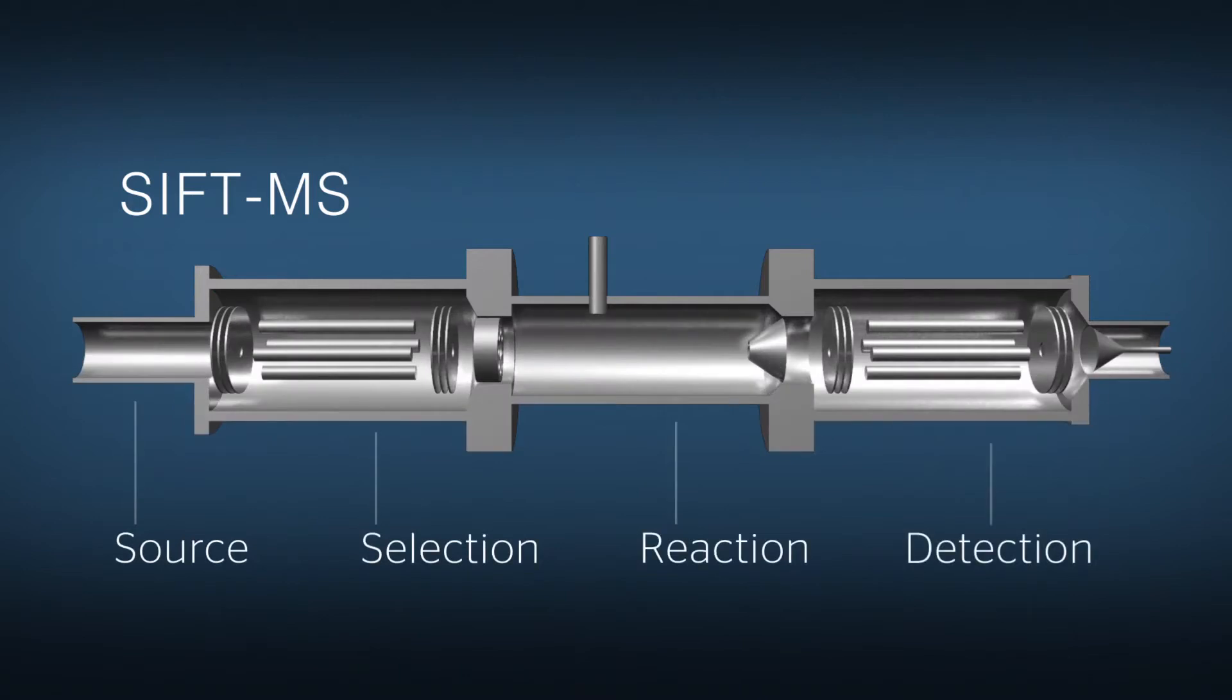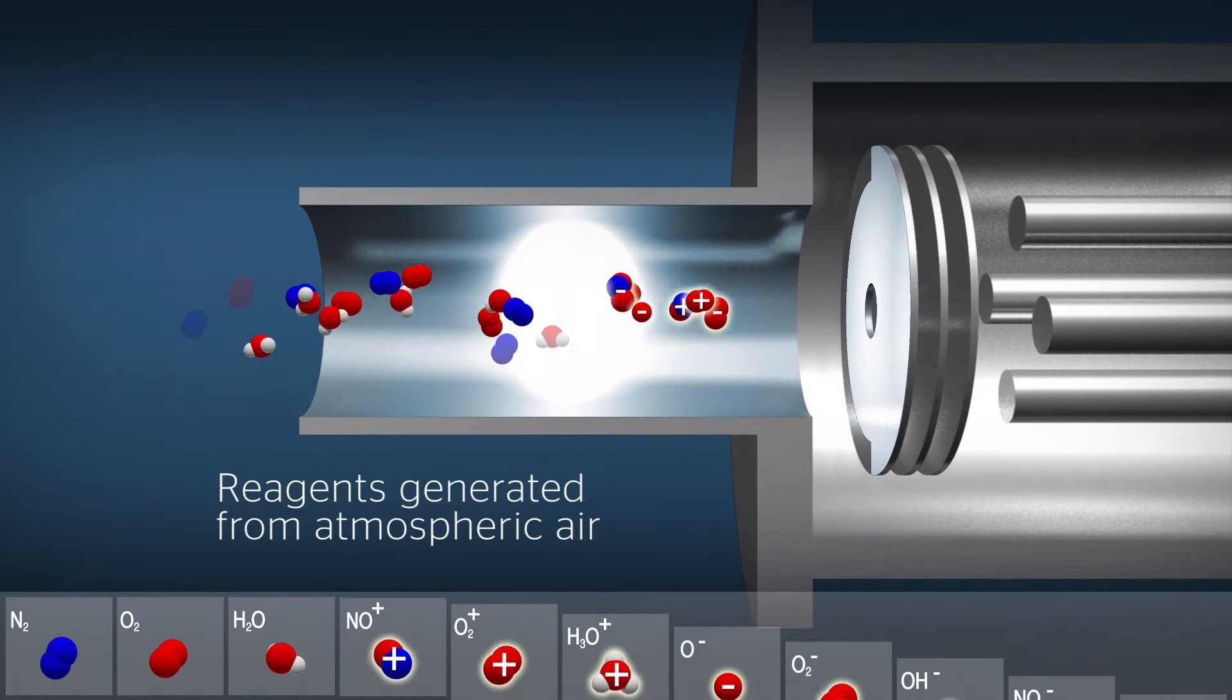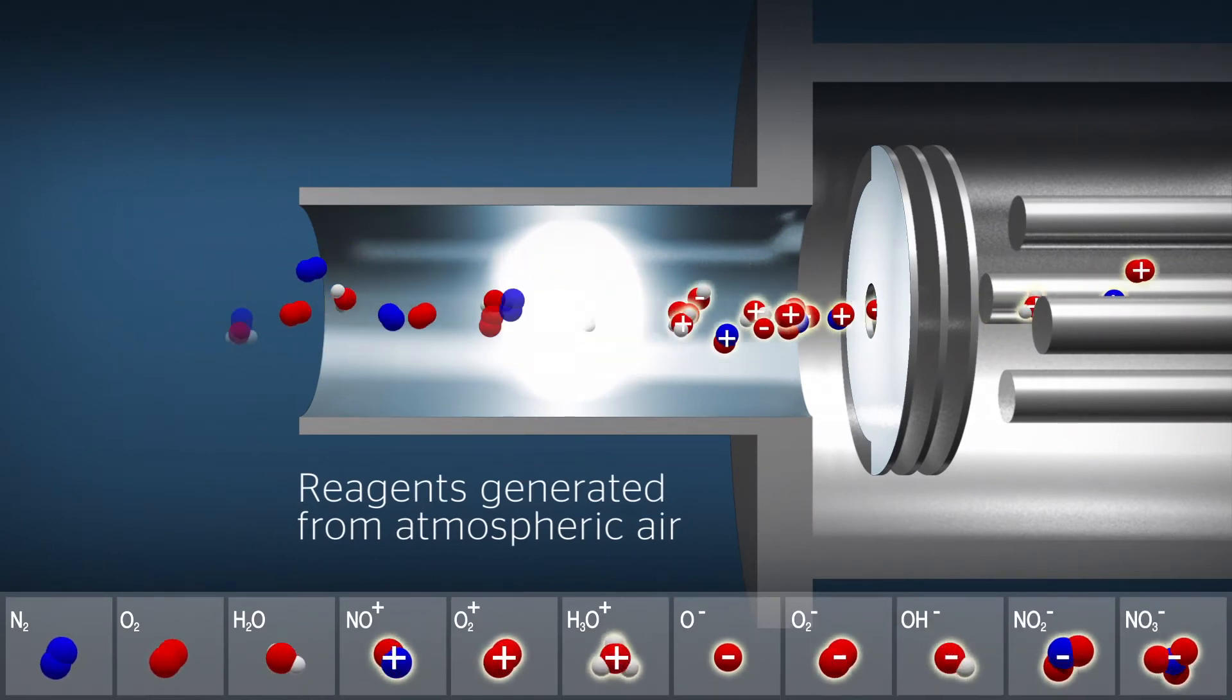Selected ion flow tube mass spectrometry instantly quantifies compounds in air to less than one PPT. Air and water vapor pass through a microwave discharge to produce multiple reagent ions.